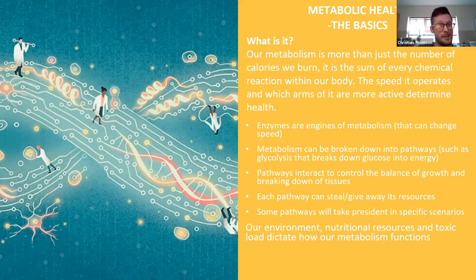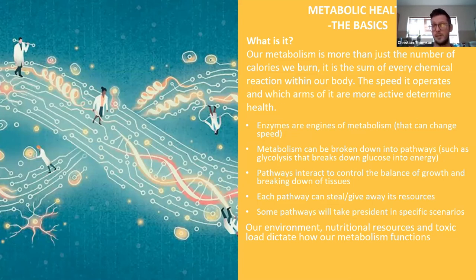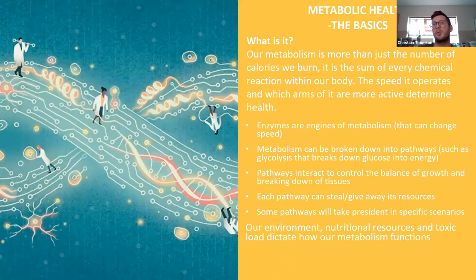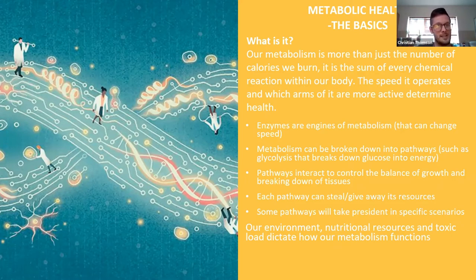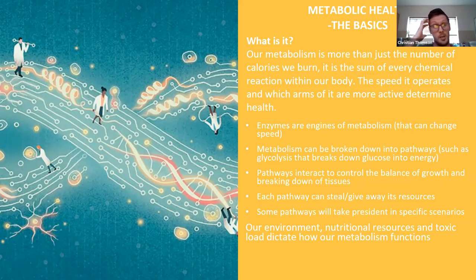These pathways definitely impact so many areas of our life. One of the main things we're talking about is the liver — a very central controlling system within our visceral organs that dictates how and when a lot of things occur within our body. Pathways interact and control the balance of growth and breakdown of tissues. This is extremely important for understanding how health and disease develop. Disease is just 'dis-ease' — not being at ease. When things start to break down, that's when disease starts to occur.